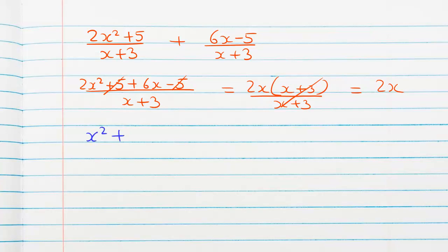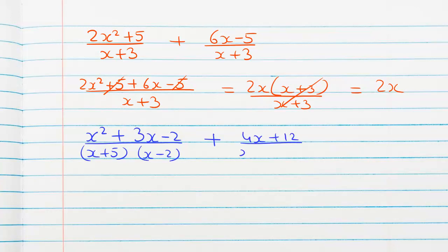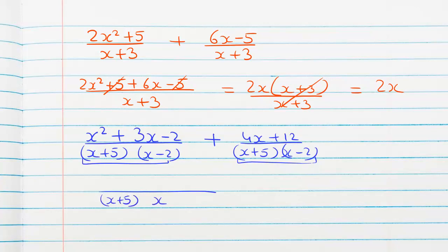We have (x²+3x−2) over (x+5)(x−2) plus (4x+12) over (x+5)(x−2). Don't get confused with the many terms — remember this is the same common denominator. A lot of students make a mistake and start to factor or take out a common factor in the numerator right away. Don't make that mistake; first write everything out, then simplify and factor later.